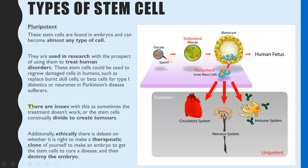I'm emphasising potential because these cells are not currently used in these treatments, because in research they have found issues. One of those issues is linked to the first part of the definition — the property that stem cells have the ability to continually divide. What they found in research with mice and other animals is that even when they have used stem cells to create new cells to replace damaged ones, unfortunately those cells continue to divide and create tumours.